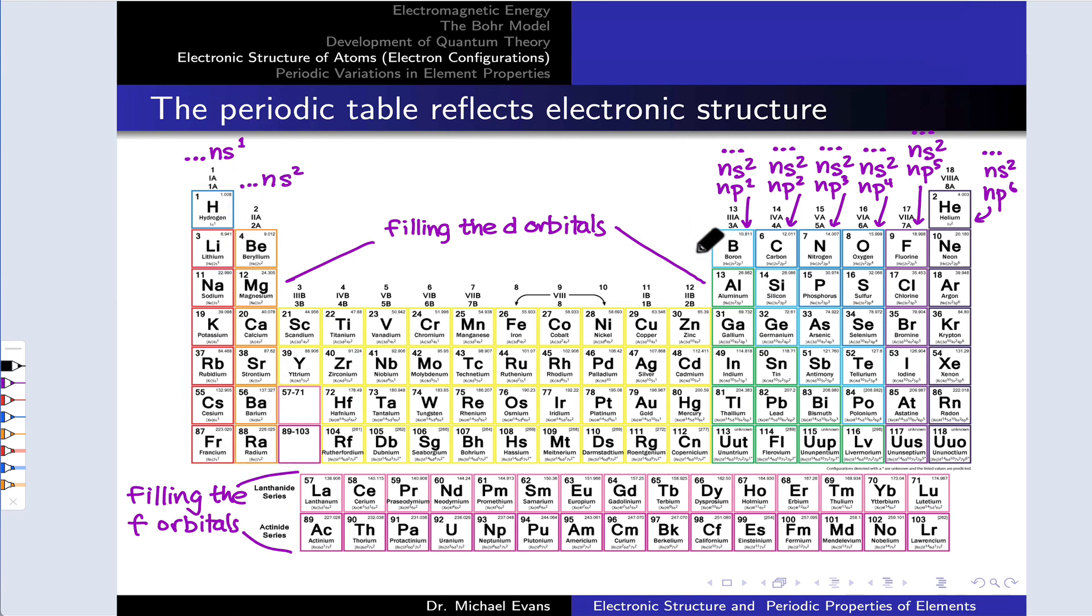And then we move over here. Now we're filling up the P subshell, and you can see that with P1, P2, P3, P4. This is called the P block from group 3A or group 13 through group 18.